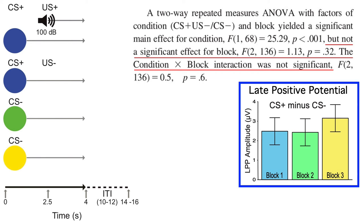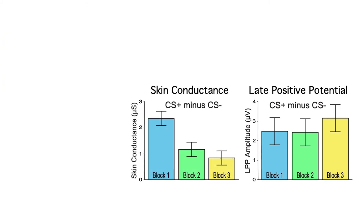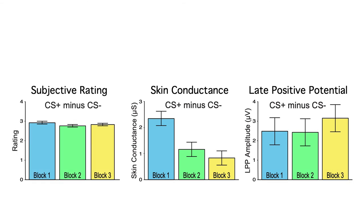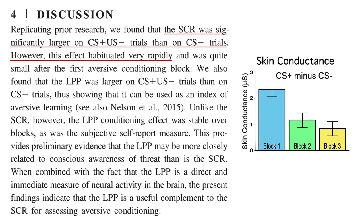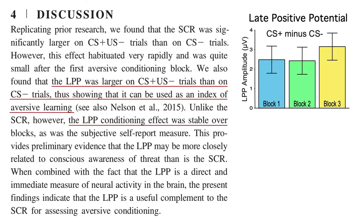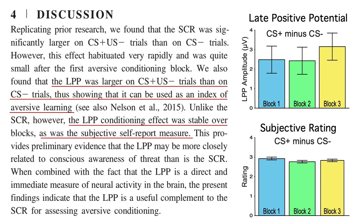You can see these effects in the CS plus minus CS minus difference scores — the CS plus elicited a larger LPP than the CS minus in all three blocks. By contrast, the skin conductance response habituated over time. Subjects also reported their subjective probability of the likelihood that the CS plus would be followed by a noise burst at the end of each block, and these subjective reports didn't habituate. The LPP also showed a significant conditioning effect and it remained stable over blocks, as did the subjective ratings.